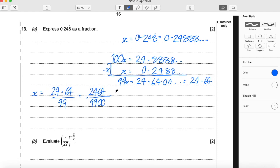And x, we said, was just equal to 0.248 recurring. So that just shows that 0.248 recurring is equal to 2464 divided by 9900. So there's our answer. So that's part A.